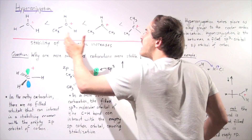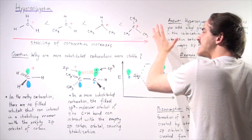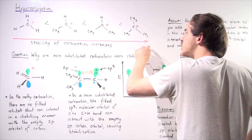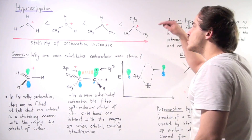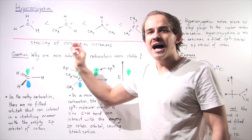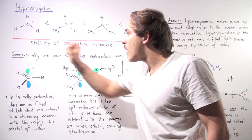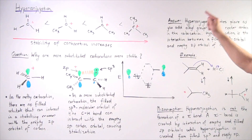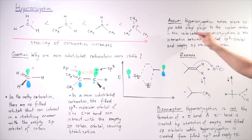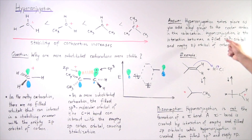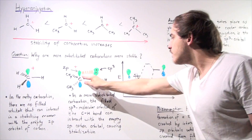We have a HOMO-LUMO interaction: the highest occupied molecular orbital is the more stable sp3 hybridized orbital containing the two electrons, and the higher-energy 2p orbital is the lowest unoccupied molecular orbital. They interact to form a new molecular orbital that is more stabilized and lower in energy than the original. As we go from left to right — methyl to tertiary — we have more hyperconjugation taking place because we have more substitution and more alkyl groups bonding to the central carbon with the positive charge and the empty 2p orbital. Hyperconjugation is the interaction between a filled sp3 hybridized orbital of the carbon-H bond and the empty 2p orbital of the carbocation carbon.